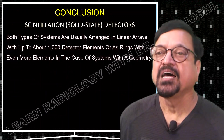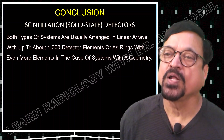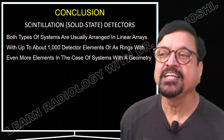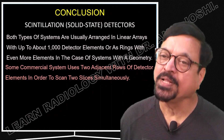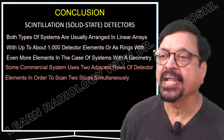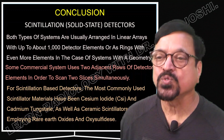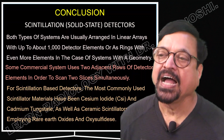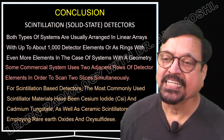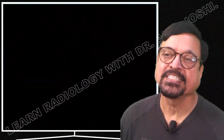Both types of system are usually arranged in a series. Solid-state systems have around 1,000 detected elements in a ring, depending on system geometry and design. Some commercial systems use two adjacent rows of detector elements to scan two slices simultaneously, saving scanning time in faster, more specialized machines. For scintillation-based detectors, the most commonly used scintillator materials have been cesium iodide (CsI) and cadmium tungstate, as well as ceramic scintillators employing rare earth oxides and oxysulfides.